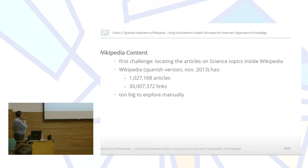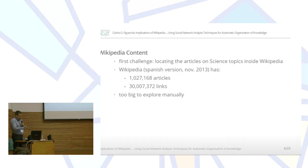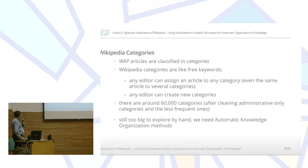If we want to analyze science in Wikipedia, we need to locate the articles, the scientific articles, inside Wikipedia. We have a hard problem, because Wikipedia, in the Spanish version, has about more than one million articles, and more than 13 million links between these articles. So this is too big to work by hand.